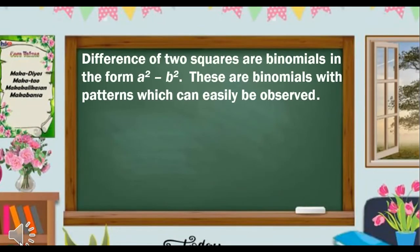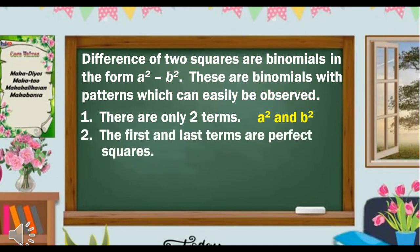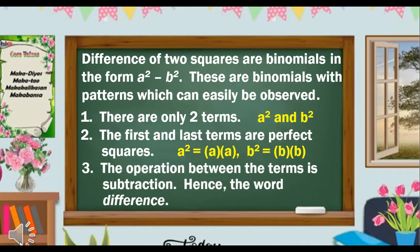Difference of two squares are binomials in the form a squared minus b squared. These are binomials with patterns which can easily be observed. And what are these patterns? First, there are only two terms. Second, the first and last terms are perfect squares. And third, the operation between the terms is subtraction — hence, the word difference.